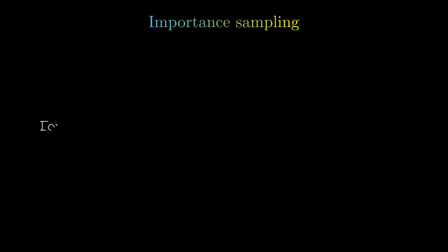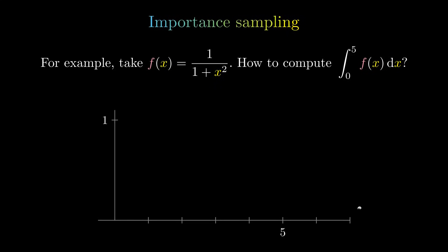Now, let's take a look at an example of how we would choose a good sampling distribution. Given the function F defined as the reciprocal of 1 plus X squared, we would like to compute the integral of F between 0 and 5.